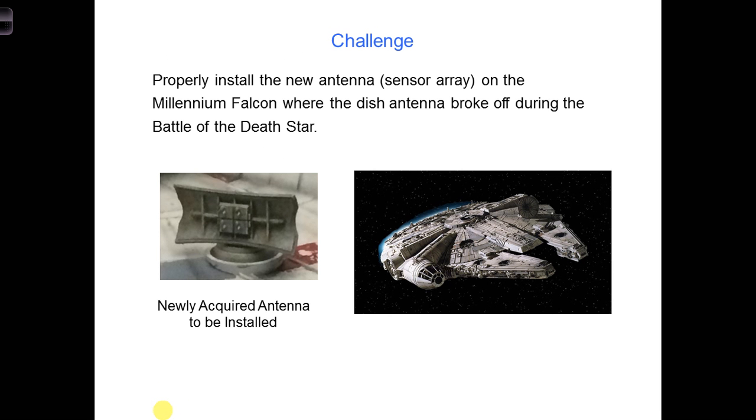All right, get out your in-class project notebook and write down the impedances. The new antenna has ZL equals 35 minus j70 ohms, and the new transmission line Chewbacca has available is Z0 equals 70 ohms.